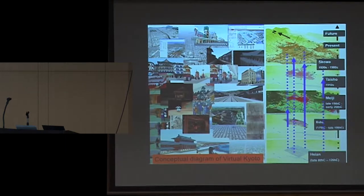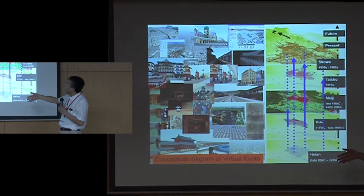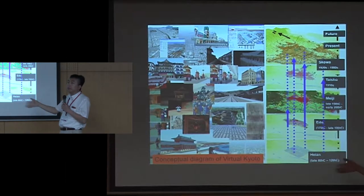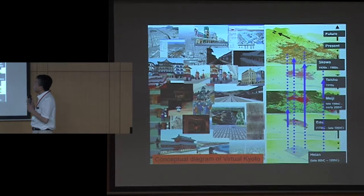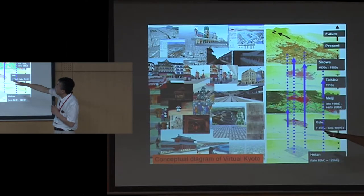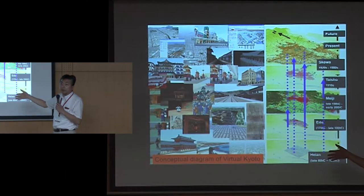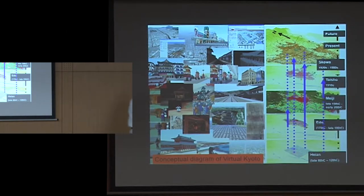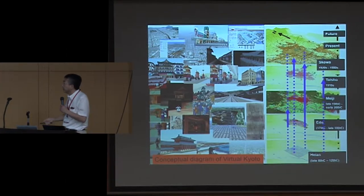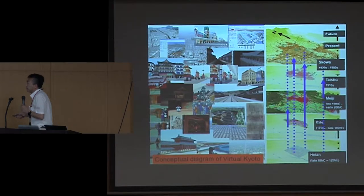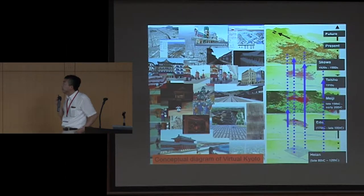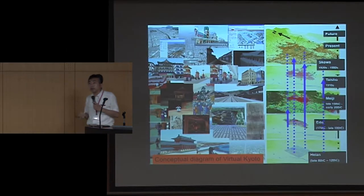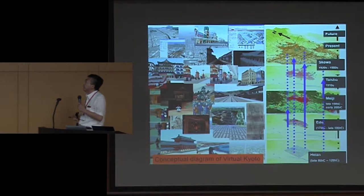Also, the Art Research Center — this center's mission is creating many data archives, the digitization of cultural assets, including tangible and intangible ones. For example, some traditional Noh performance is an intangible asset. And we also have many historical buildings, especially world heritage sites. Tomorrow we will visit two world heritage temples. We have many, many cultural assets in Kyoto.